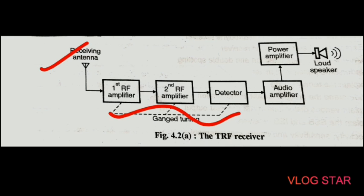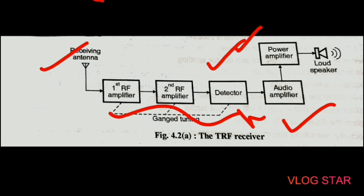The amplified signal is then demodulated — detected — by the detector, and the carrier signal is bypassed so that only the modulating signal is recovered. The detected signal at the output of the detector is amplified using the audio amplifier, and after that the audio amplifier passes the output signal to the power amplifier, which is then given to the loudspeaker for reproduction.